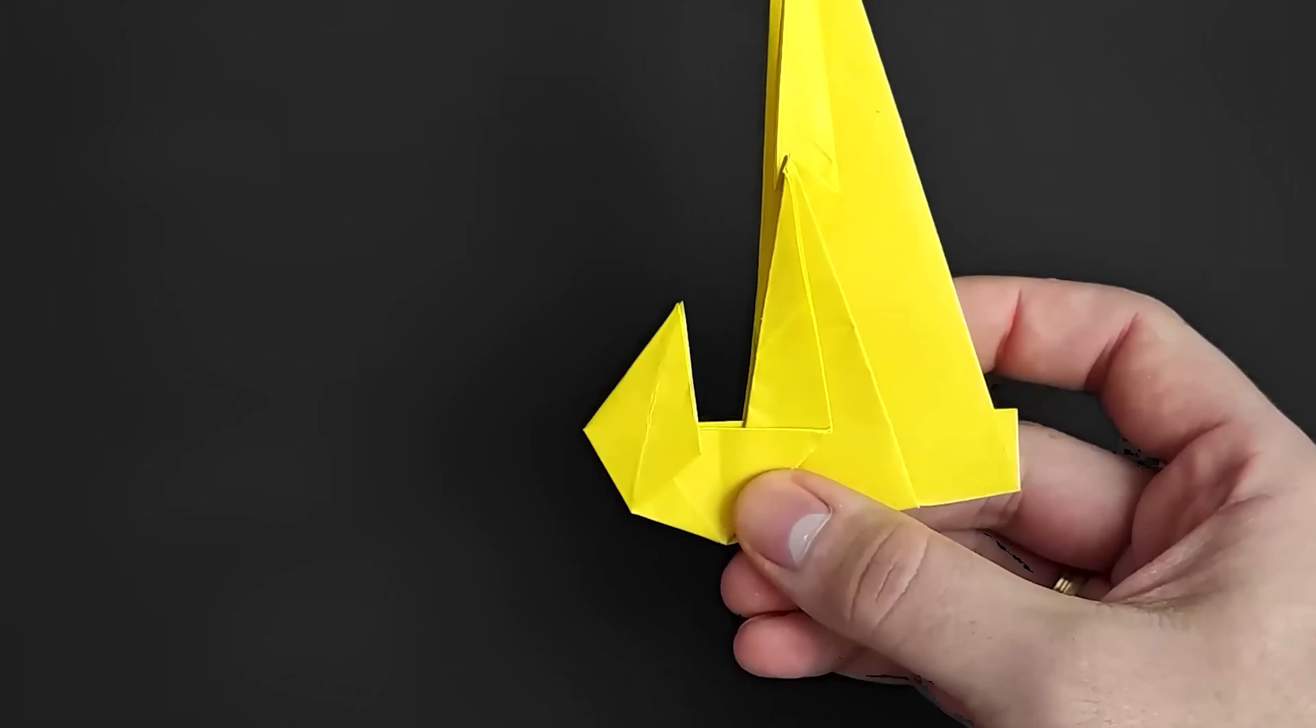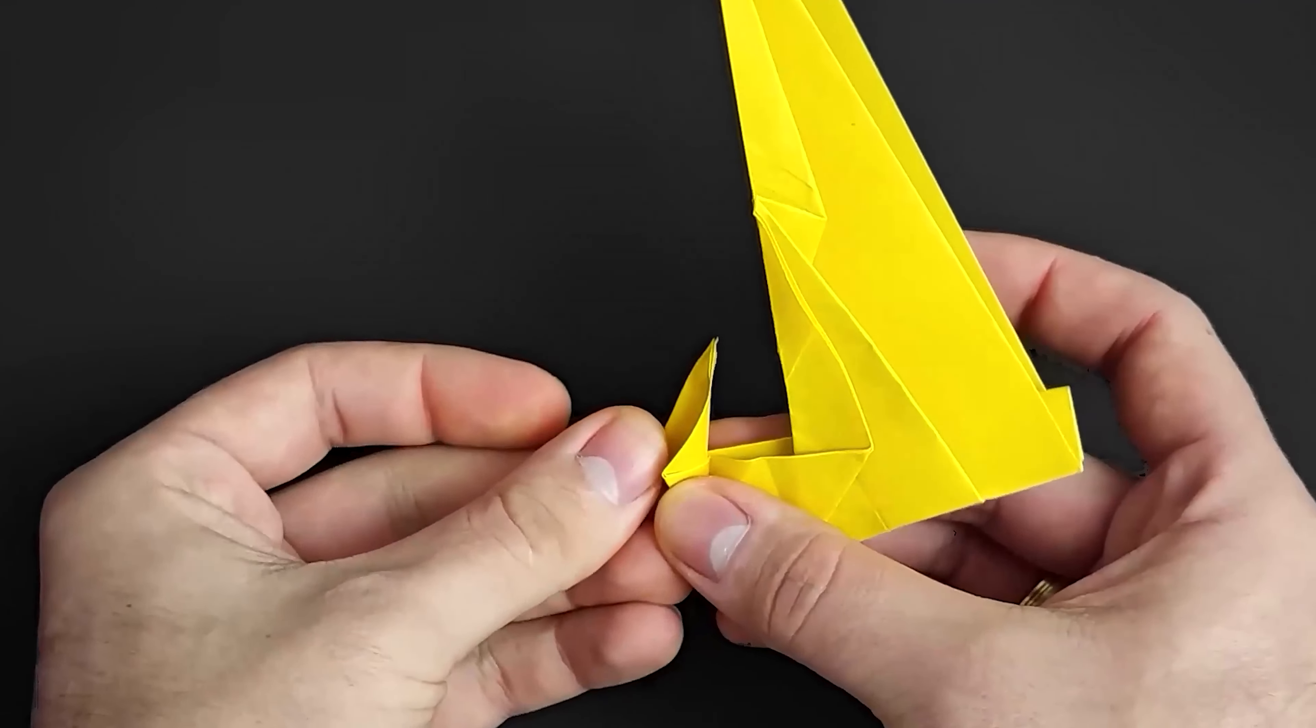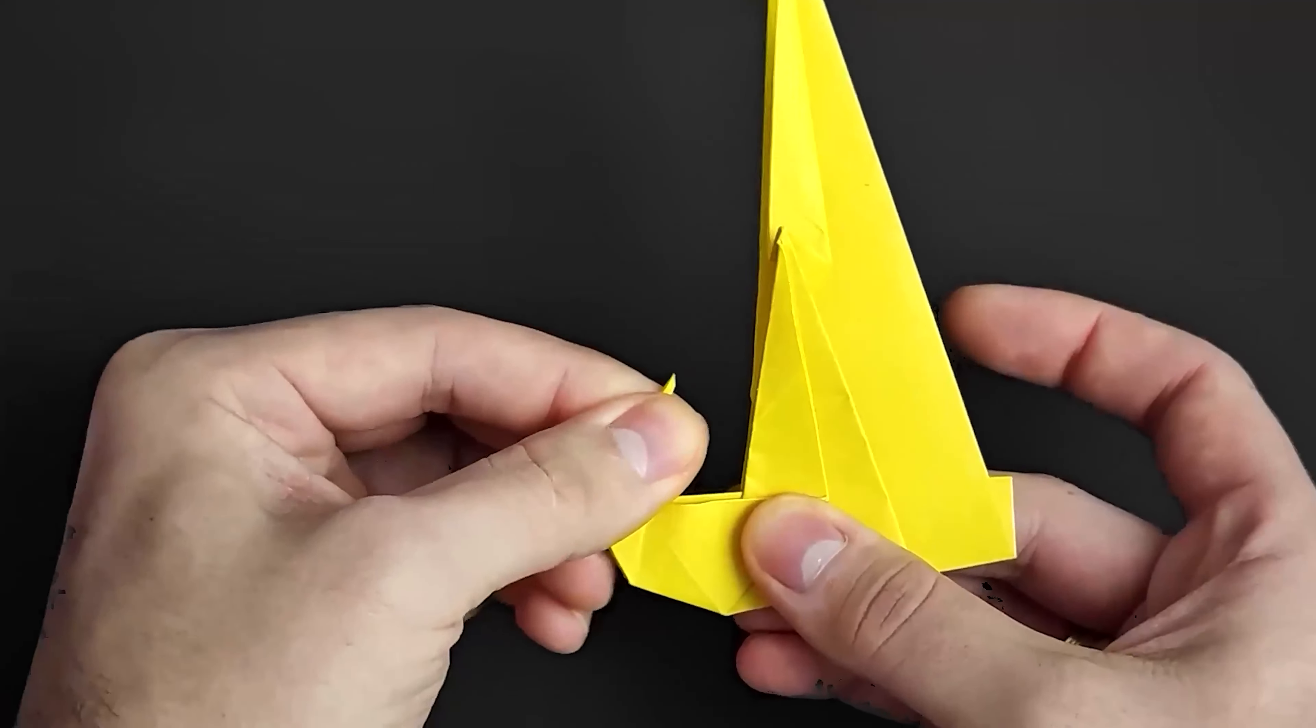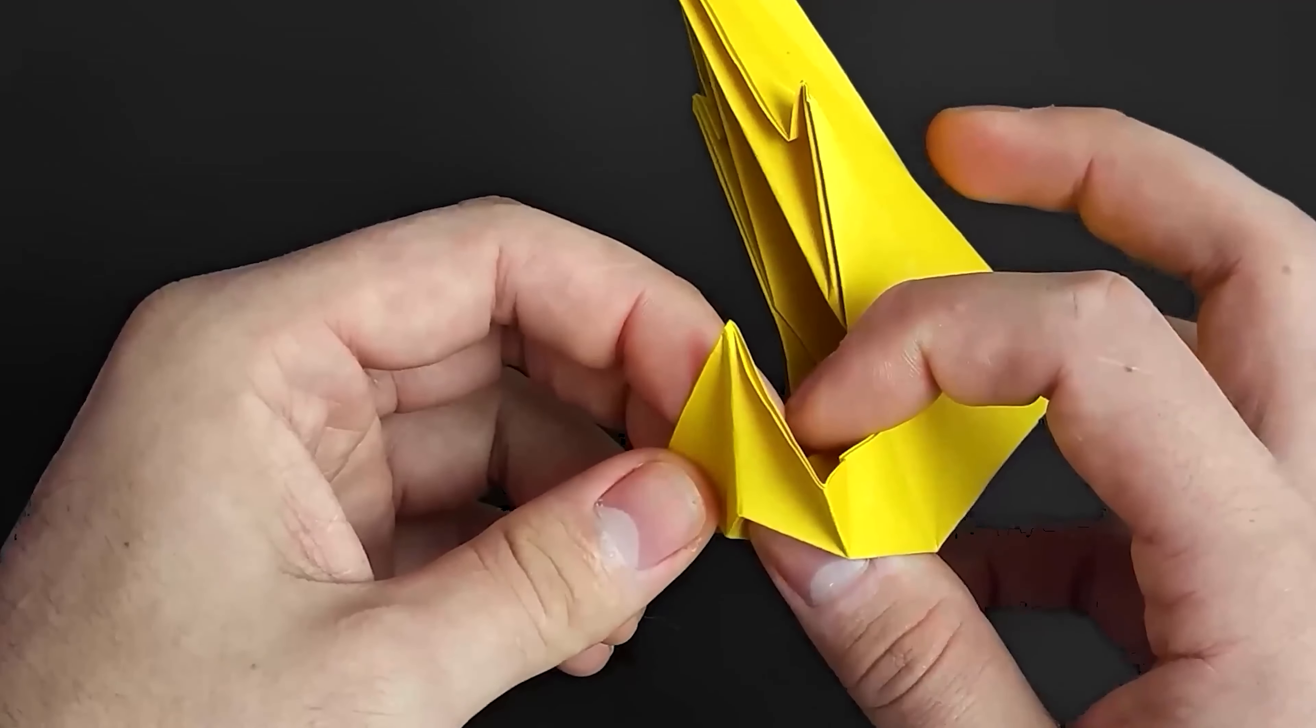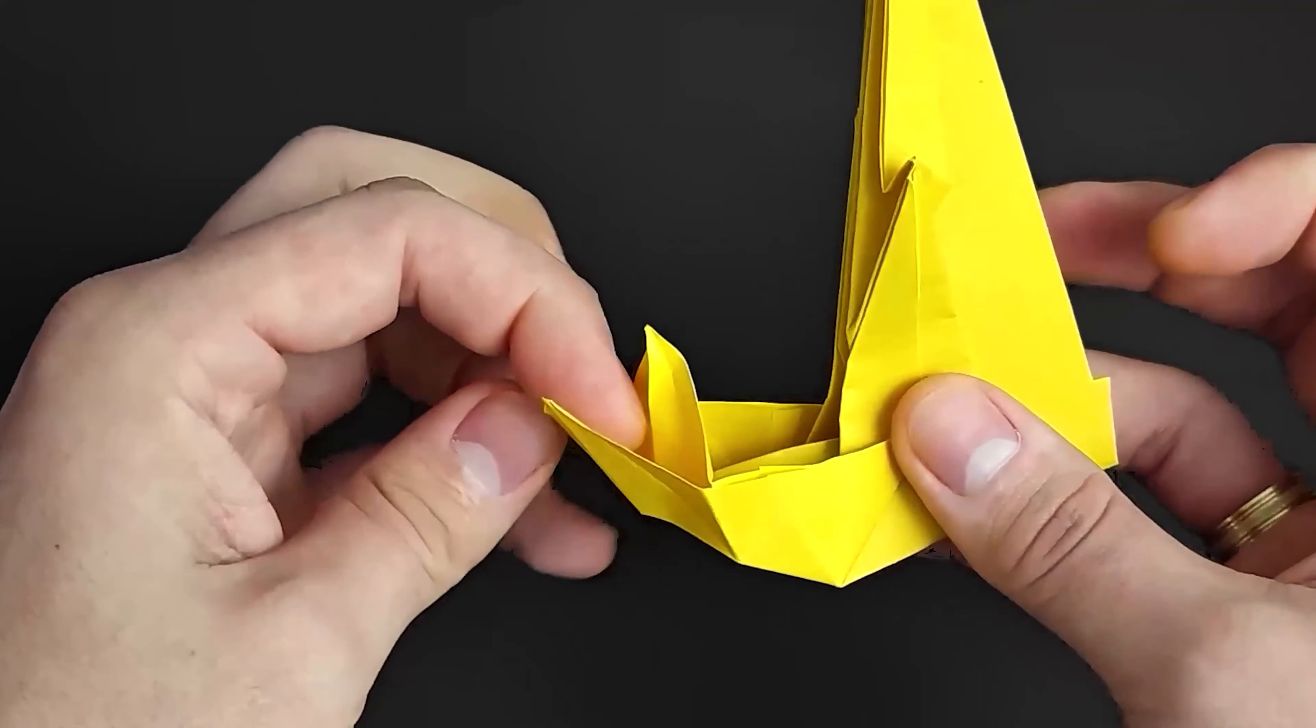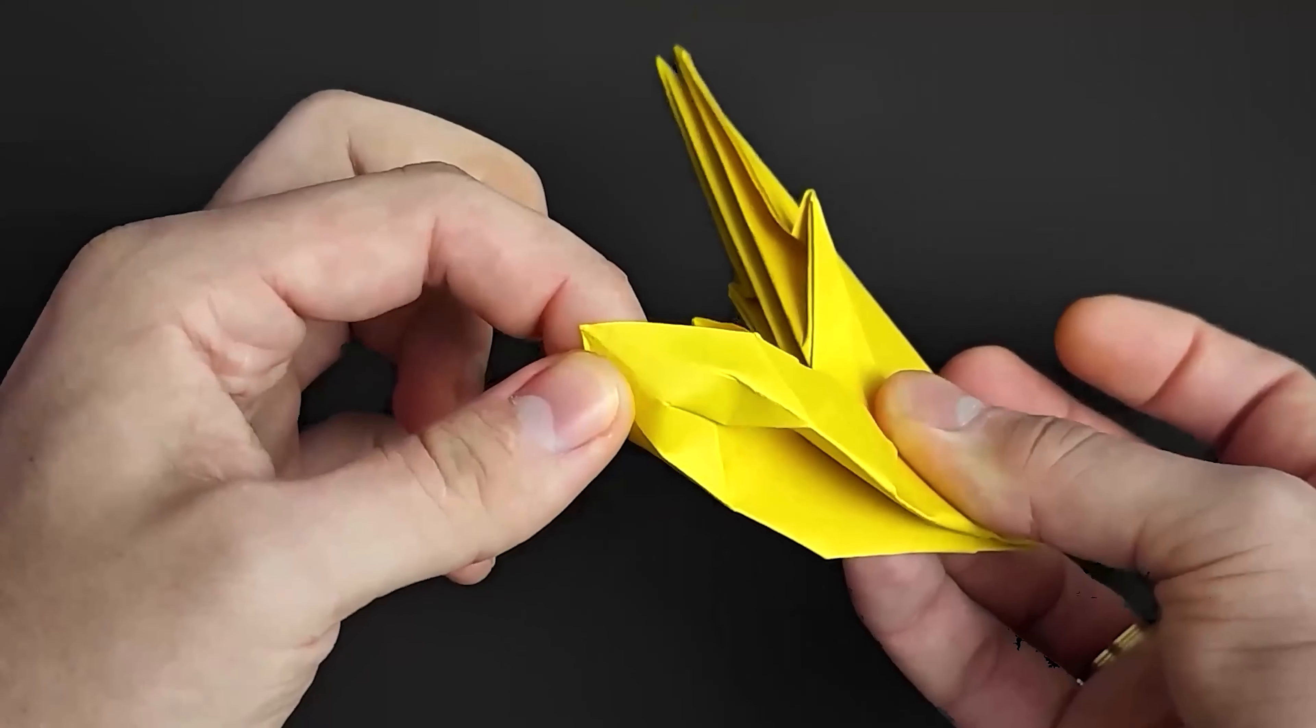Now fold the two sides to the left. This part has two layers. We'll have to separate the first of them and bring it to the left. Fold it again as it was before.